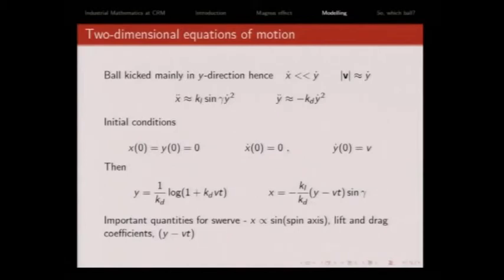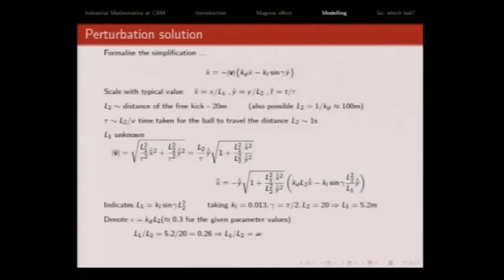Now the motion in the y direction depends on this KD, the drag coefficient for the forward motion, the initial velocity and the time in the air. What I care about is the spin. That's what I'm trying to have an effect on. Now I see that the motion in the x direction depends on the lift coefficient, the drag coefficient, the position y minus vt, and the spin axis. By doing it analytically, I get an idea of what I can change easily to solve my problem.